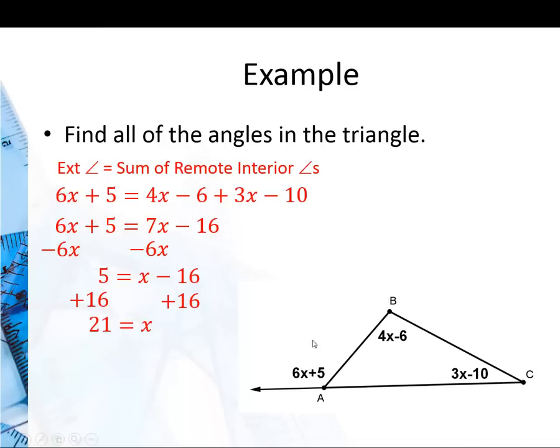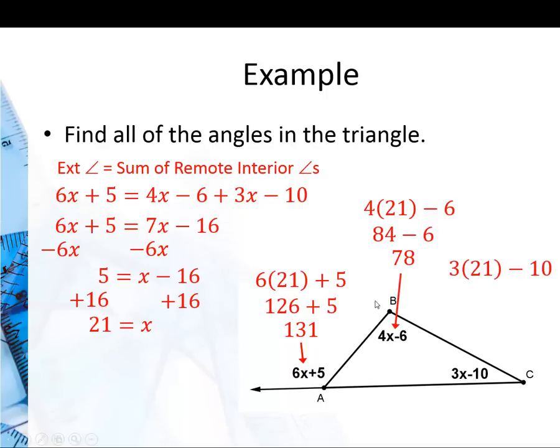Now that I know x is 21 I can find the rest of the angles. Substituting 21 in for x I get 6 times 21 plus 5 or 126 plus 5 which is 131. Next I go 4 times 21 minus 6 which is the same as 84 minus 6 or 78 degrees. Finally, 3 times 21 minus 10 is 63 minus 10 which is 53. And you can double check this, 78 plus 53 will give you 131. So the sum of the two remote interior angles equals the exterior angle.